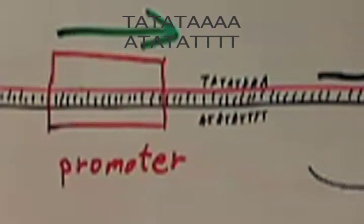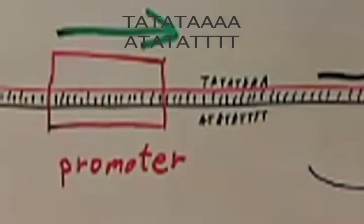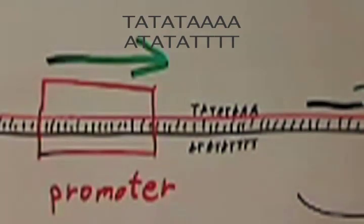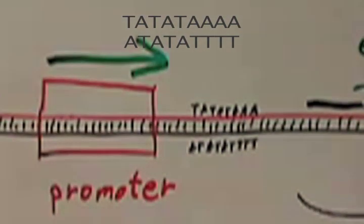It has been called a TATA box and includes an A-A-A adenine-adenine-adenine on one end. So the gene promoter might look like this.